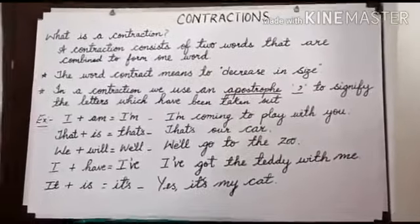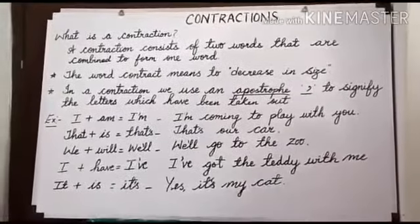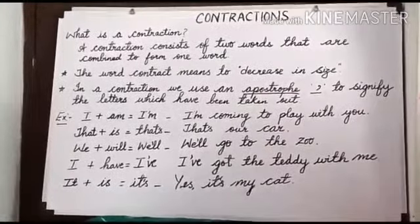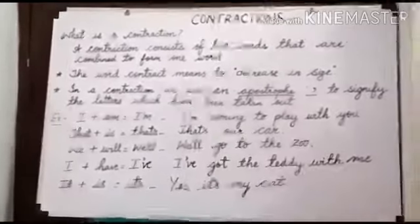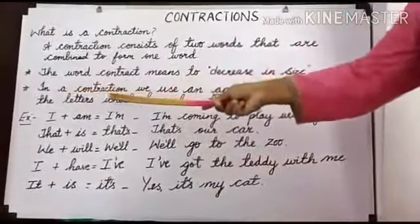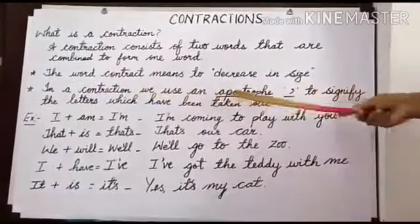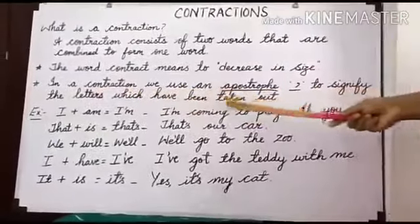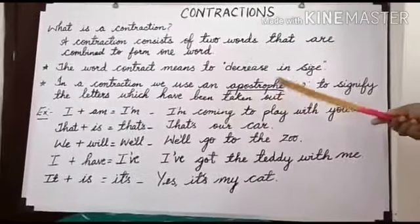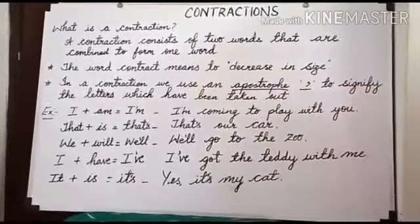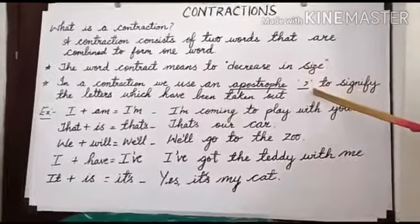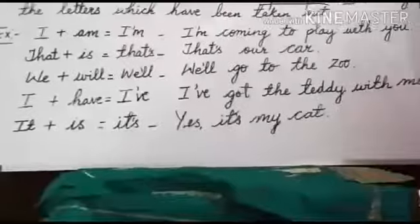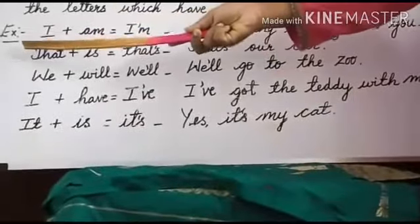Contractions are used during casual writing and speaking. They are used as a way of speaking quickly and more fluently. In a contraction, we use an apostrophe to signify the letters which have been taken out. Apostrophes are a form of punctuation and they have many uses, one of which is to help with forming contractions.